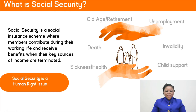We need to emphasize here that social security is a human rights issue — everybody deserves a decent living. Broadly, social security takes care of the following contingencies: old age or retirement, death, sickness, unemployment, invalidity, and child support.